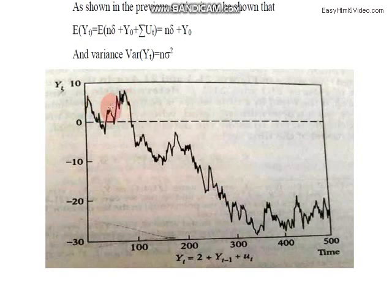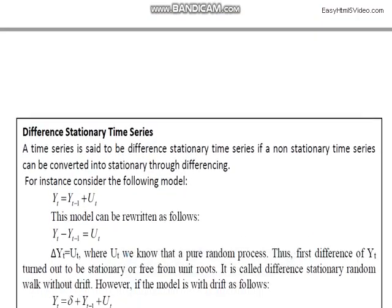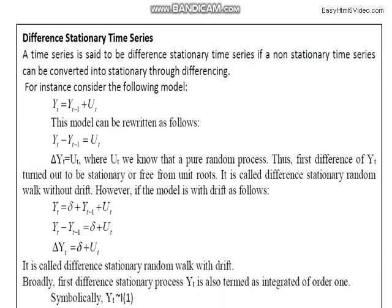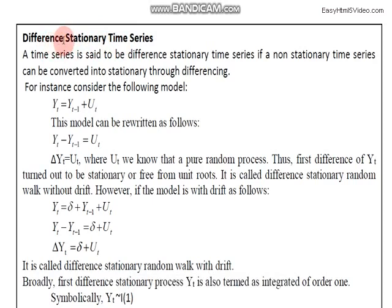Originally the series was moving at one level; now it has drifted and is moving at a higher level — that is a random walk with drift. If your variable is non-stationary, the first method to make it stationary is differencing. Differencing means you take the first difference of your model: Y_t equals Y_{t-1} plus u_t.